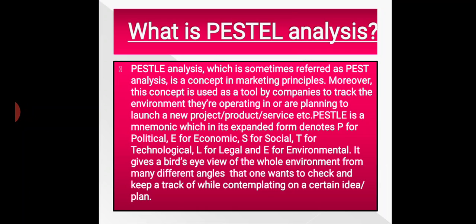PESTEL is a mnemonic which in its expanded form denotes P for political, E for economic, S for social, T for technological, L for legal, and E for environmental. It gives a bird's eye view of the whole environment from many different angles that one wants to check and keep track of while contemplating a certain idea or plan.